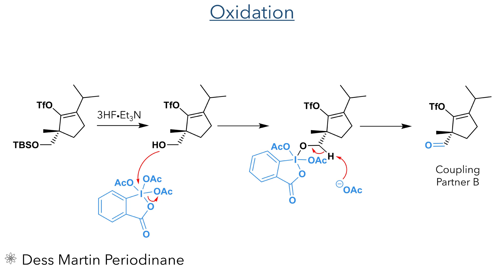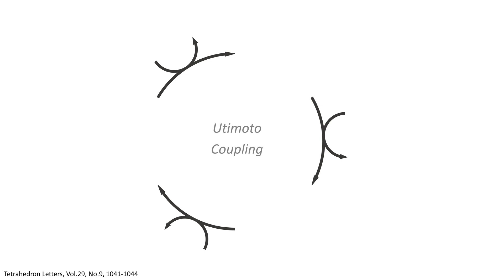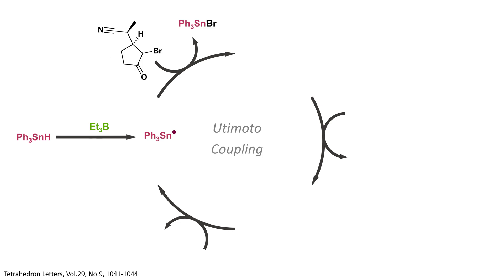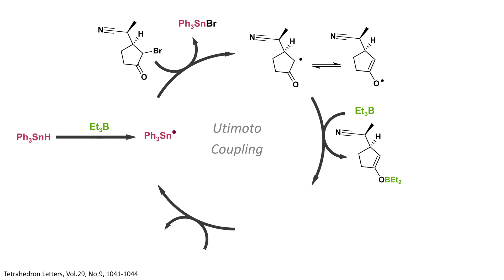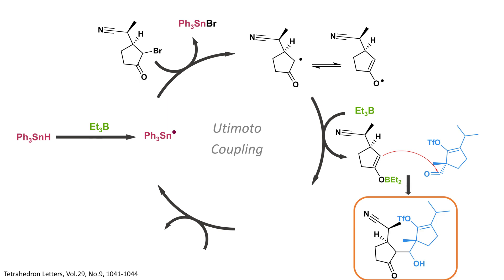So with these two coupling partners in hand, the authors proceeded to the synthesis of cotylenol, which serves as the glycosyl acceptor in the synthesis of Kotelenin A. The Utimoto coupling starts with the reaction of triphenyltin hydride with triethylborane, which generates a tin radical. This reacts with coupling partner A to abstract the bromide and leave a radical in its place, which is in equilibrium with an enolate-like species where the radical resides on the oxygen atom. Triethylborane reacts with this species and allows it to react as a nucleophilic enolate and attack the aldehyde of coupling partner B, forming the desired product. This process forms an ethyl radical which reacts with another equivalent of triphenyltin hydride to eliminate ethane and reform the tin radical species.